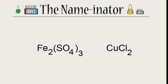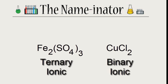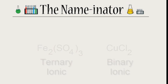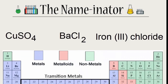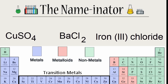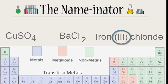Note that we can have both binary and ternary ionic compounds with transition metals. Pause and select the ionic compounds that have transition metals. You should have selected copper sulfate — Cu is a transition metal — and iron(3) chloride. That 3 tells you that the charge on the iron is +3.